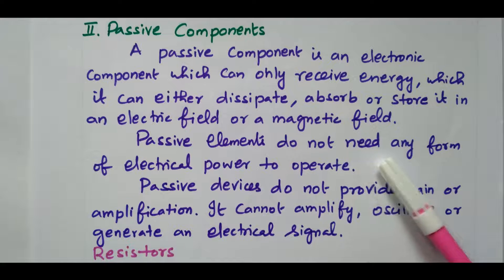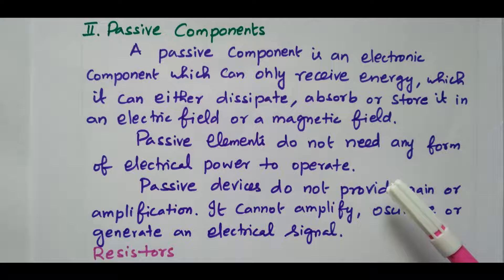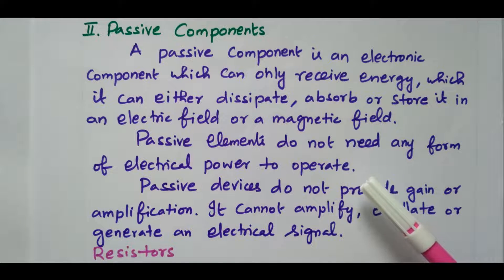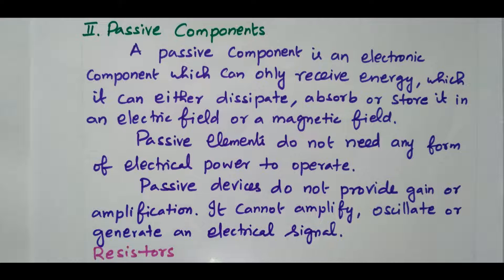Passive elements do not need any form of electrical power to operate. No specific power is needed to operate this element — if you connect it in the circuit, it will do the work without needing any supply power. Passive devices do not provide gain or amplification; they will not provide any amplification. They will either absorb, dissipate, or store energy — they cannot amplify, oscillate, or generate an electrical signal.